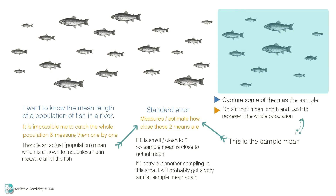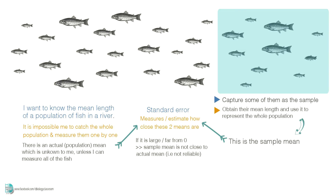On the contrary, if the standard error is large or far away from zero, it means my sample mean is not very reliable, as it is pretty far away from the actual mean. If I redo the data sampling, it is very possible that the new sample mean will be different from the first one.